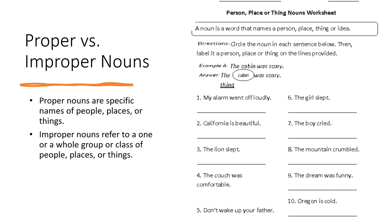I'm glad you were able to do that little exercise — that will prepare you as we go through this information right here. We're going to look at each one of these mini sentences and talk about whether it's a noun, and then if it's a proper noun or an improper noun. So once again, proper nouns are specific names of persons, places, or things. Improper nouns refer to one or a whole group or class of people, places, or things.